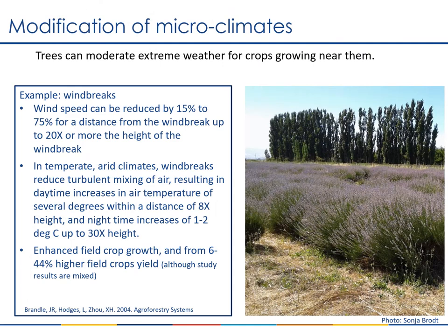Windbreaks are probably one of the better known examples of using trees on the edges of crop fields to moderate weather extremes. Research has shown that windbreaks can reduce wind speed by 15 to 75 percent, and this effect extends for a distance equal to 20 times or more the height of the windbreak. In temperate and more arid climates, windbreaks reduce turbulent mixing of air, resulting in daytime temperatures several degrees higher within a distance of 8 times the windbreak height, and can increase nighttime temperatures by 1 to 2 degrees Celsius up to 30 times the windbreak height. Research results are somewhat mixed, with some studies showing 6 to 44 percent higher yields, but results depend heavily on windbreak design and regional weather dynamics.